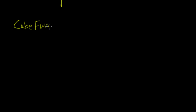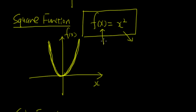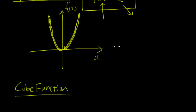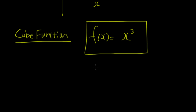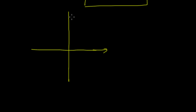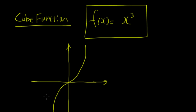Next is the cube function. If the square function is f(x) = x², then the cube function is f(x) = x³. Whatever goes in, it's cubed instead of squared. The graph of the cube function has a distinctive S-like shape. Remember the general shape of what's called the cube function.